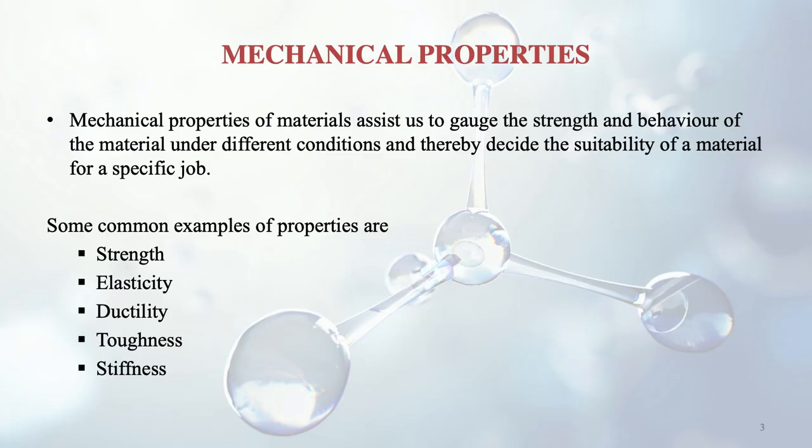When we talk of mechanical properties, it comprises different things. Some examples are strength, elasticity, ductility, toughness, and stiffness. You will be able to gauge the strength and behavior of a material under different conditions and thereby decide the suitability of a material for a specific job.